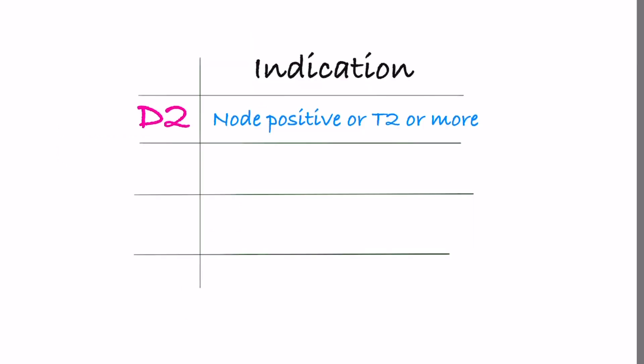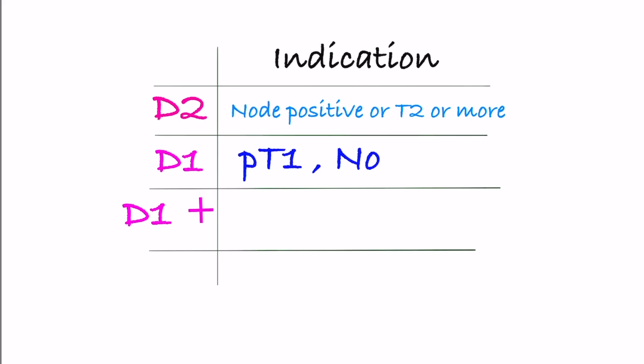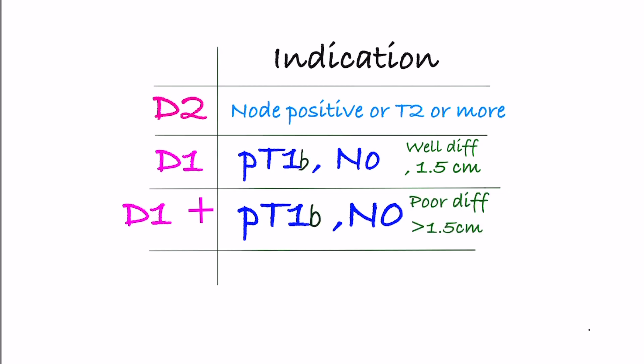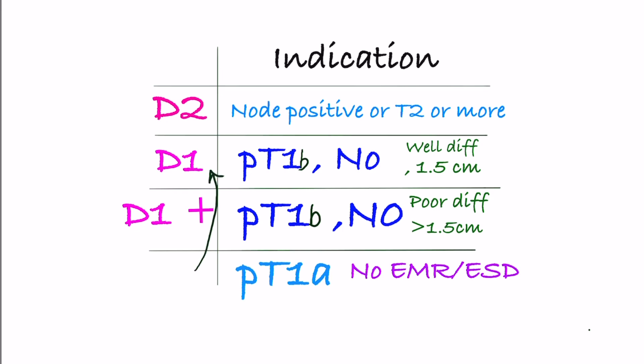D2 lymphadenectomy is indicated for clinical node-positive or clinical T2 or greater tumors. D1 or D1 plus is for clinical T1 and T0 tumors. D2 should be performed whenever the possibility of nodal involvement cannot be dismissed. For well-differentiated small T1b tumors less than 1.5 centimeters, D1 is done. For T1b tumors larger than that, D1 plus is done. T1a tumors are nowadays treated with endoscopic mucosal resection (EMR) or endoscopic submucosal dissection (ESD), so no lymphadenectomy is done. But if not treated by EMR or ESD, then D1 is done with gastrectomy.